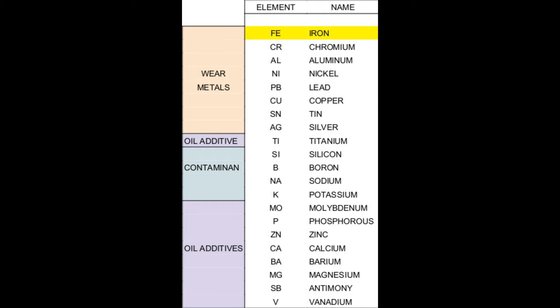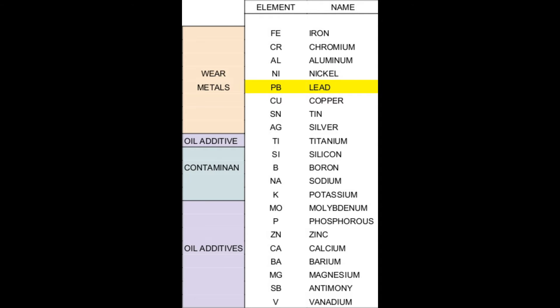Each element identified as a wear metal is present in one or more components within your engine. Iron is an abundant element within your engine and is typically sourced to the cylinders, crank, or camshaft. Chromium is typically associated with piston rings. Aluminum is typically sourced to the pistons and/or turbocharger. Nickel is typically associated with the valve system. Lead is typically associated with bearings and/or bushings. Copper is typically associated with the main connecting rod bearings and very commonly associated with the oil cooler. Tin is typically present as a bearing or bushing alloy metal.